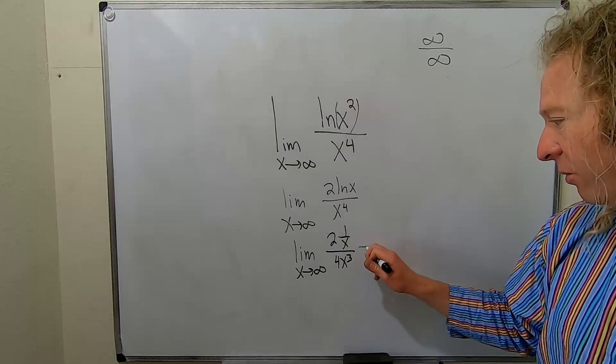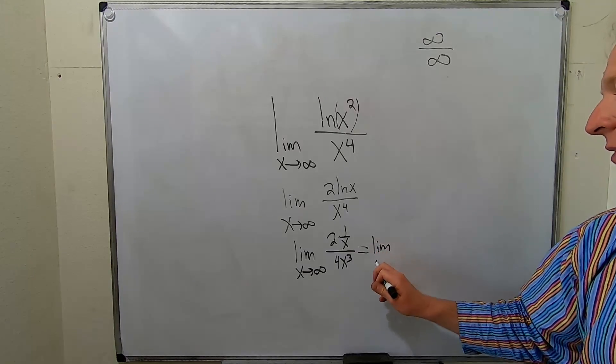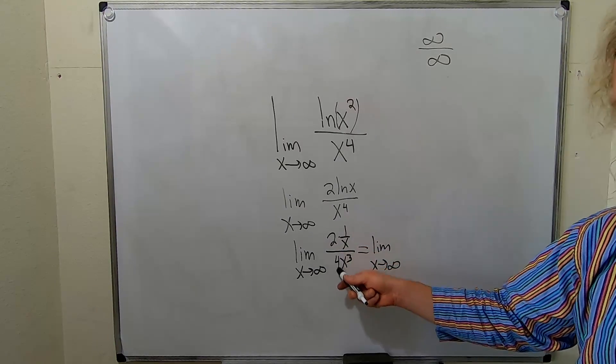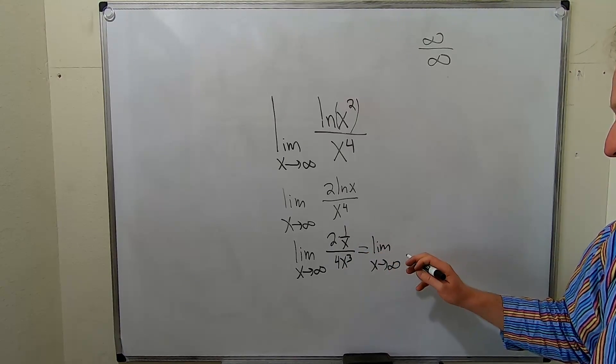Let's go ahead and rewrite this a little bit. We can write this as the limit as x approaches infinity. These are going to cancel and this can come downstairs like this.